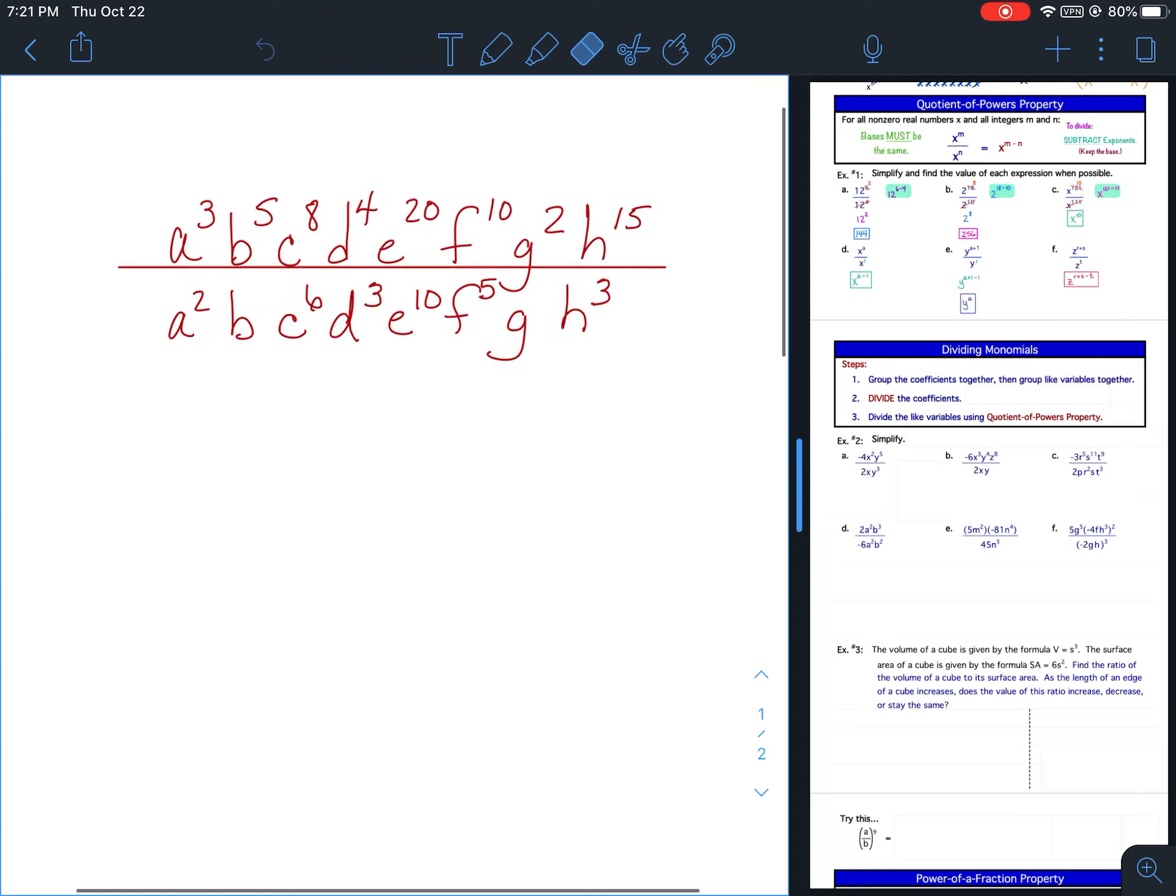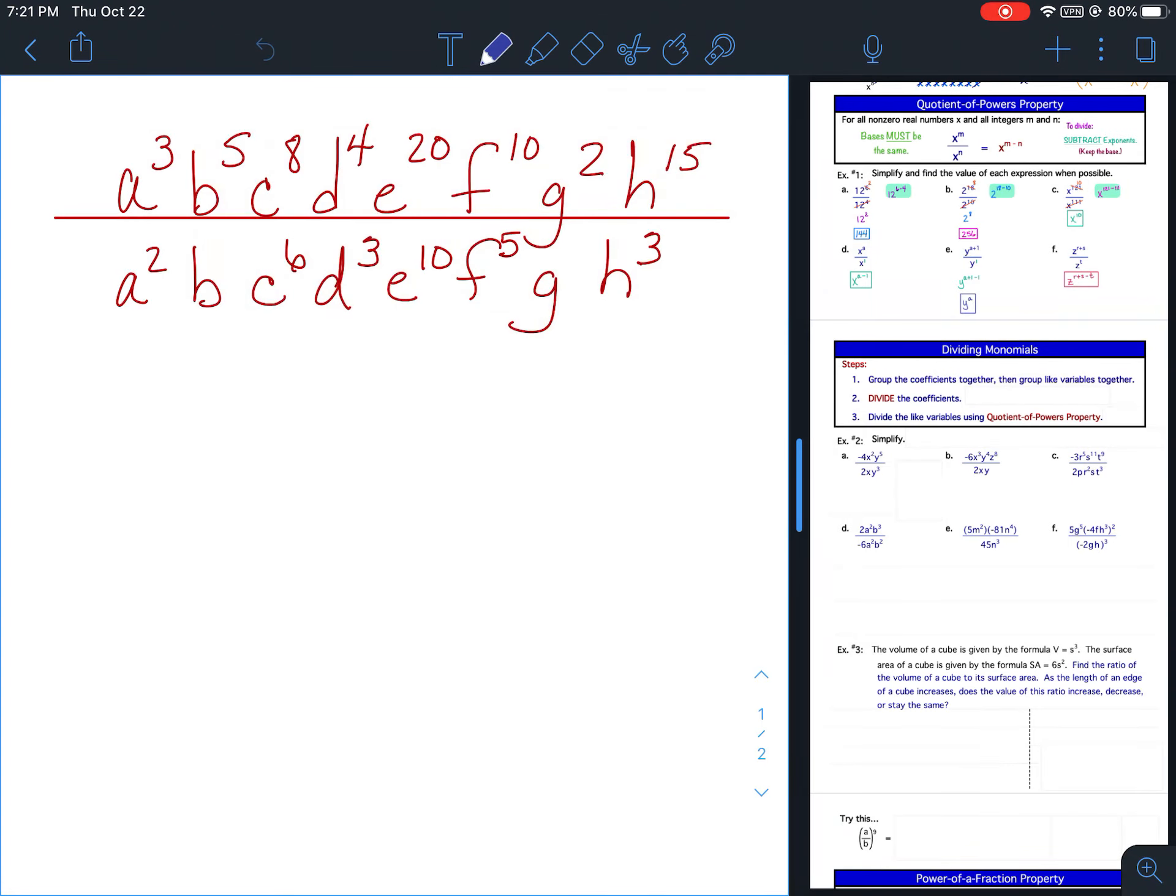So if you look I've got this big problem right here. I've got a to the second is the smaller exponent, I completely cross it out. 3 minus 2 is 1. This would be b to the first, it's the smaller exponent, I completely cross it out. 5 minus 1 is 4. C to the sixth has the smaller exponent, I completely cross it out. 8 minus 6 is 2. D to the third has the smaller exponent, I completely cross it out. 4 minus 3 is 1. E to the tenth has the smaller exponent, I completely cross it out. 20 minus 10 is 10. F to the fifth has the smaller exponent, I completely cross it out. 10 minus 5 is 5. This would be g to the first, it's got the smaller exponent, I completely cross it out. 2 minus 1 is 1. And then last, h to the third has the smaller exponent. 15 minus 3 is 12.